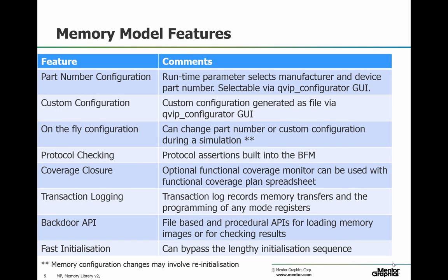Here's a quick list of the basic features of our memory models. Configuration can be done by part number. We can also do custom configuration for what-if analysis or to vary slightly from the manufacturer's configuration — for example, sometimes people want to be a little more conservative than the manufacturer's specification. Our memory models include protocol checking, coverage, and transaction logging. And all our memory models have backdoor APIs for loading images or checking results. This can be done for the whole memory using a file, or if you want to interact with particular parts of the memory, you can do it procedurally. And where appropriate, we can also bypass the lengthy initialization sequences so that you can run your tests more quickly.